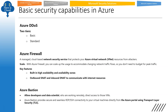Azure DDoS has two service tiers: basic and standard — remember that. Azure Firewall — definition: it's a managed cloud-based network security service that protects your Azure Virtual Network from attackers. Key features include built-in high availability and availability zones, and outbound SNAT and inbound DNAT to communicate with internal resources.